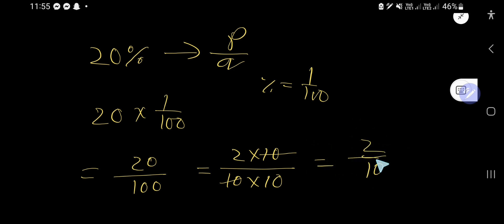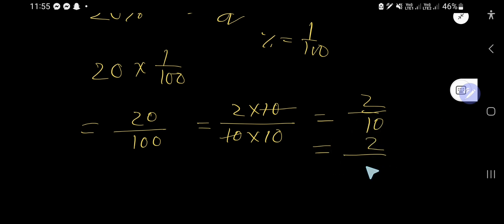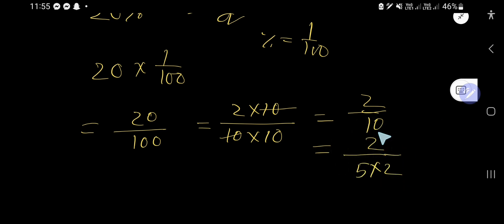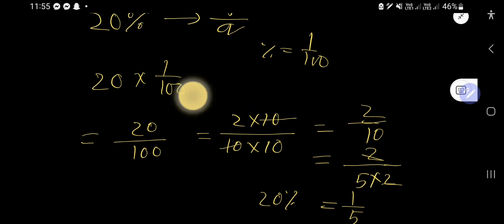Now rewrite 10 as 5 times 2. Cancel the 2 in the numerator with the 2 in the denominator, and you get 1 over 5. So 1/5 is the fractional form of 20%.